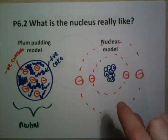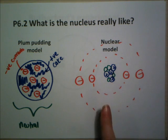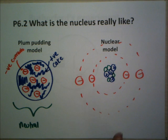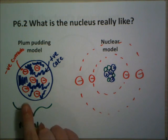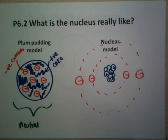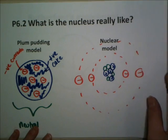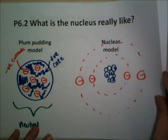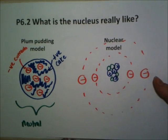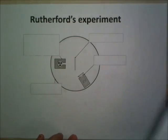This is the model accepted nowadays, and there's a reason for that. Someone called Ernest Rutherford did an experiment where he expected to get results that would verify the plum pudding model, but then actually got some results that showed it was wrong, and he came up with the nuclear model idea instead. His experiment was really quite simple, considering what it found out.